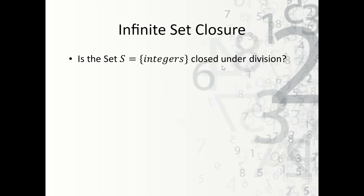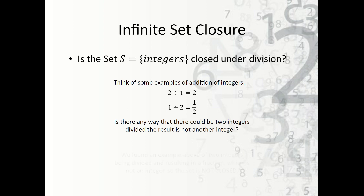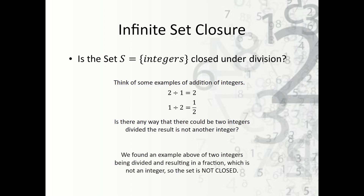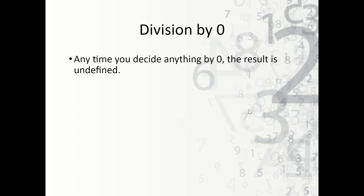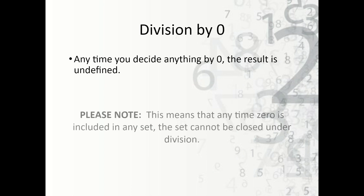What about the set S of integers — is it closed under division? When we do 1 divided by 2, we get 1/2, which is not an integer — that's a rational number. Therefore, it's not closed. There's also an easier way to tell: if we include 0 in the set, it is never closed under division because division by 0 is undefined. Since 0 is an integer, dividing a set element by 0 would be undefined, so the set is not closed.